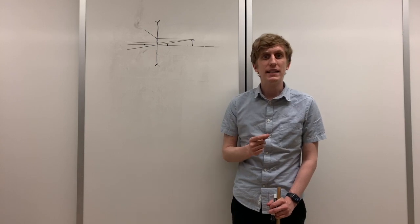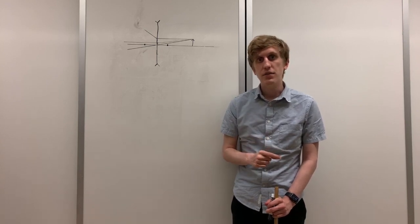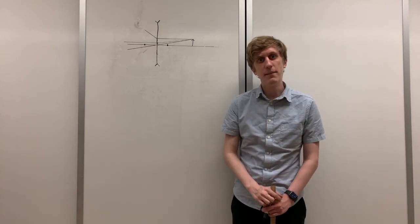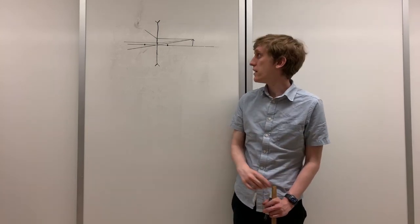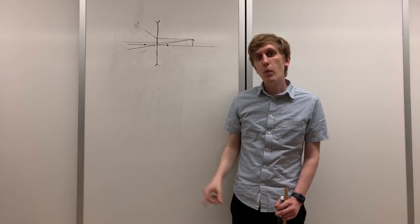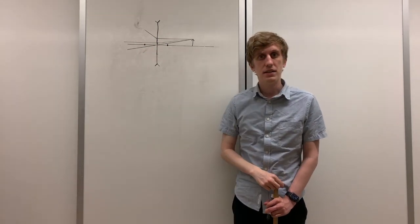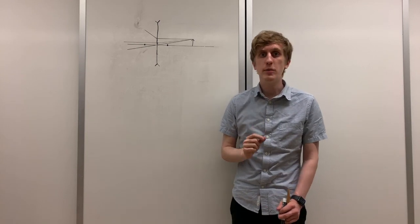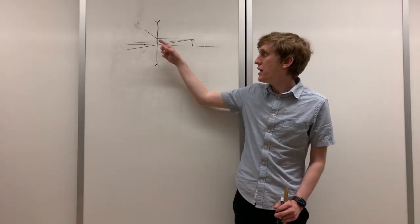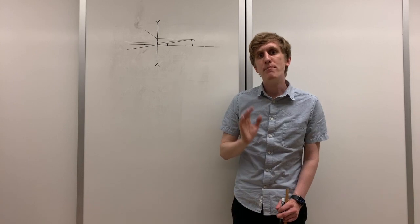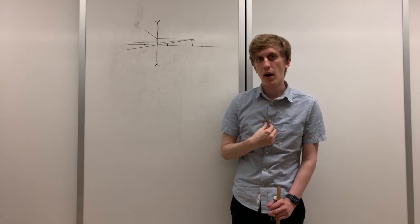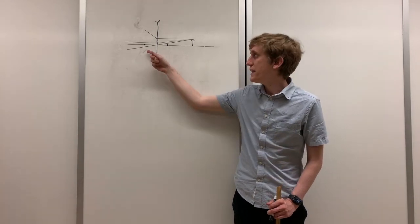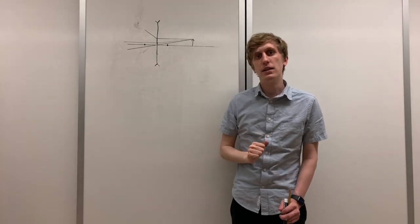Remember in the example with the diverging lens, we had to look through the lens in order to see the image. It's the same thing here. If we were standing here, we would have to look through this lens to see the image. The location that the image would appear to be is the location that all of these rays appeared to be coming from to our eyes. To find that place, we just have to trace these rays behind the lens.